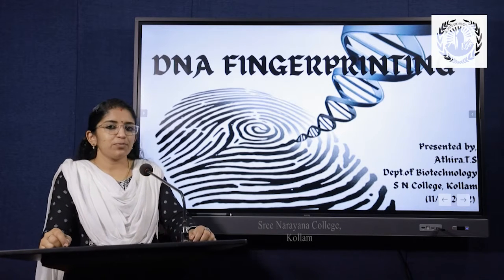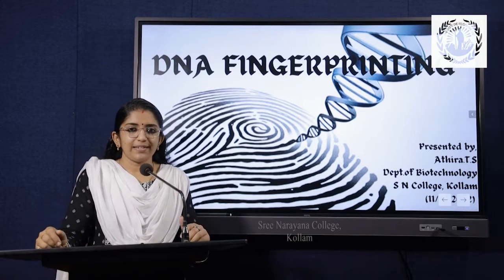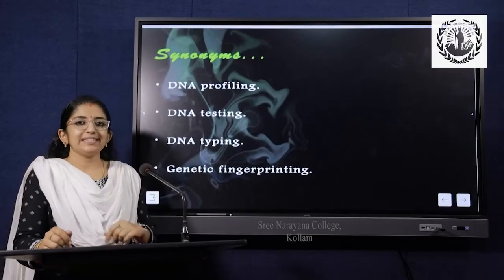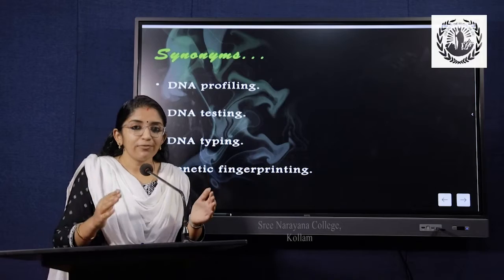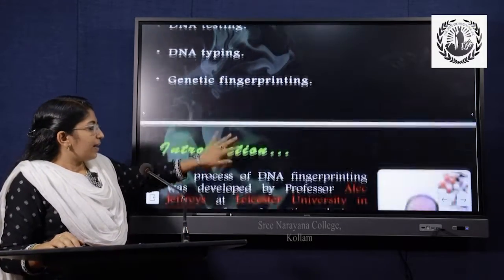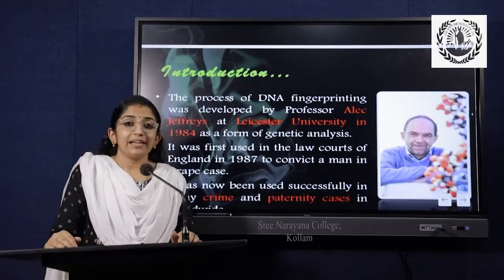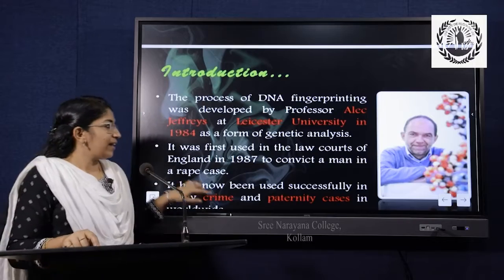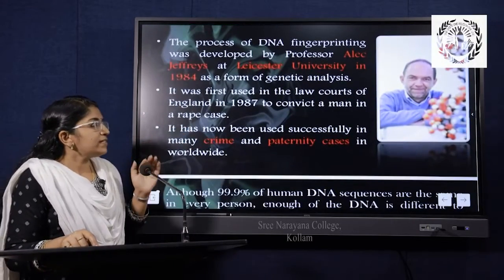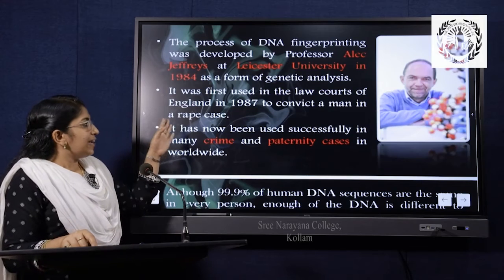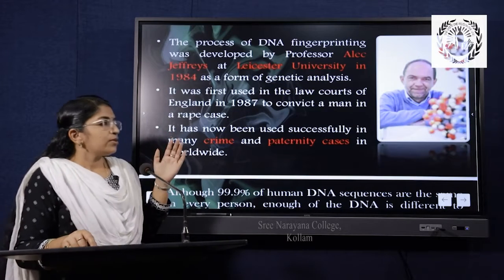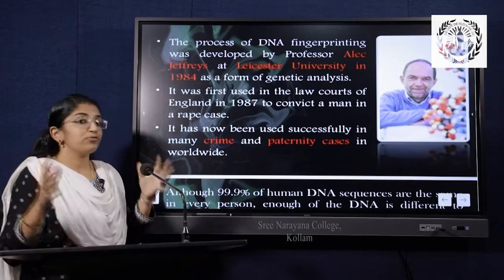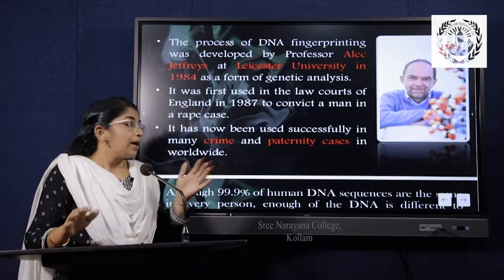What is meant by DNA Fingerprinting? It is used for identification of individuals and may also be termed as DNA profiling, DNA testing, DNA typing, genetic fingerprinting, or molecular fingerprinting. The process of DNA Fingerprinting was developed by Alec Jeffress at Leicester University in 1984 as a form of genetic analysis. It was first used in the law courts of England in 1987 to convict a man in a rape case, and has since been used worldwide in many crime and paternity cases.